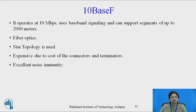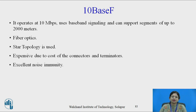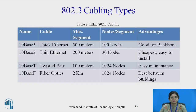The last type of cabling is 10BaseF. It operates at 10 Mbps, uses baseband signaling, and can support segments of up to 200 meters. It uses fiber optic cable and a star topology. It is expensive due to the cost of connectors and terminals, but provides excellent noise immunity.